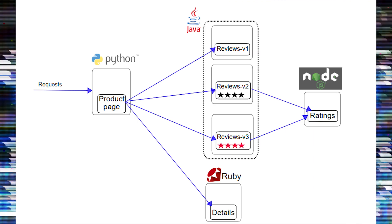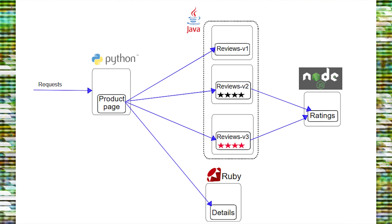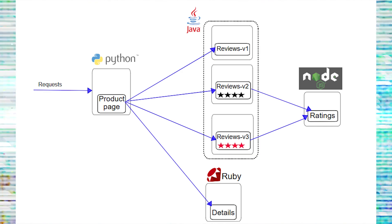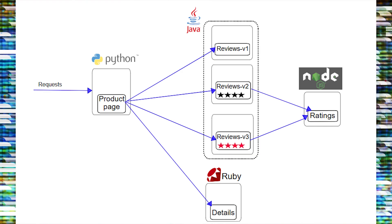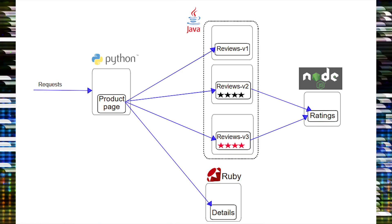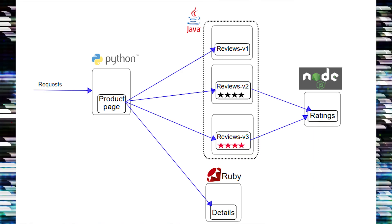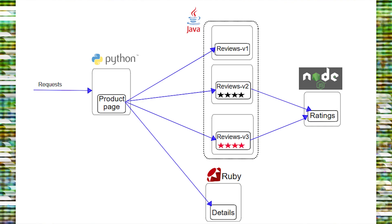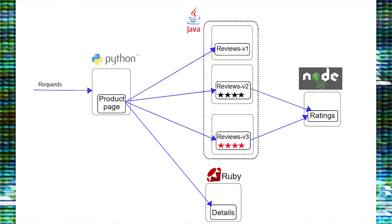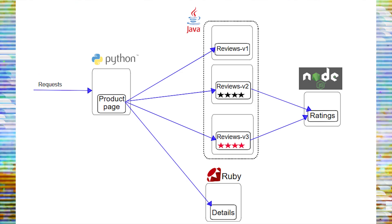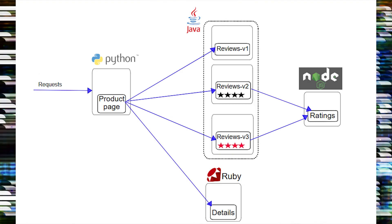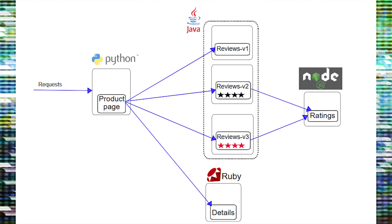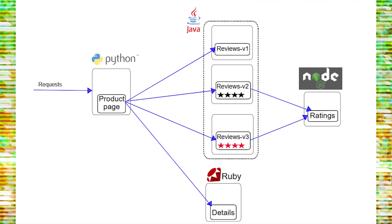The details microservice contains book information. The reviews microservice contains book reviews and also calls the ratings microservice. The ratings microservice contains book ranking information that accompanies a book review. There are three versions of the review microservice.